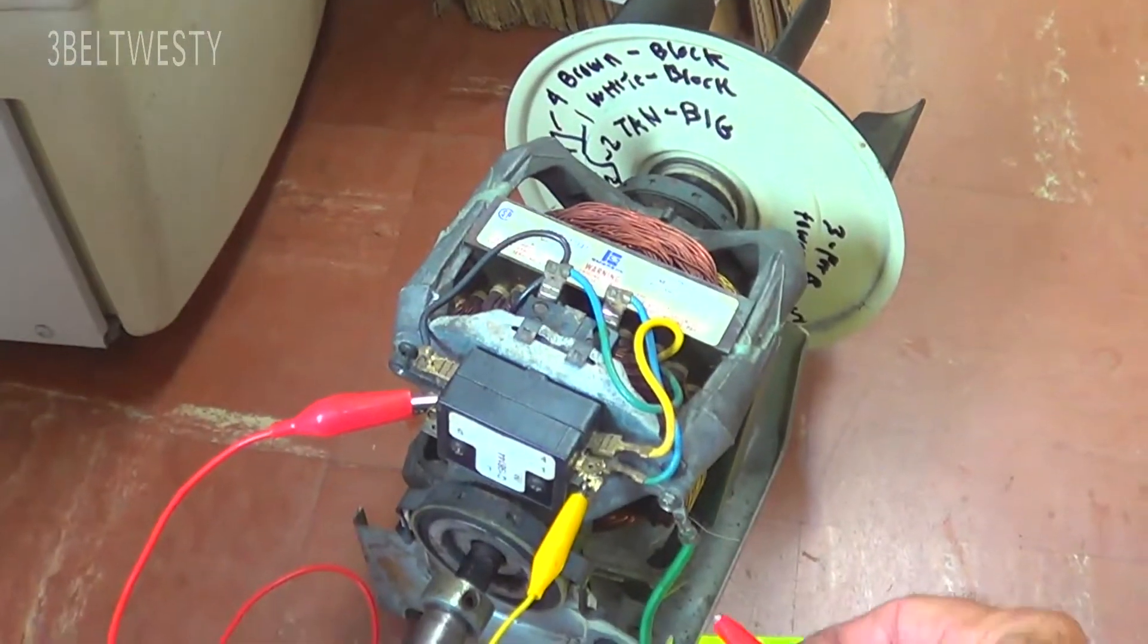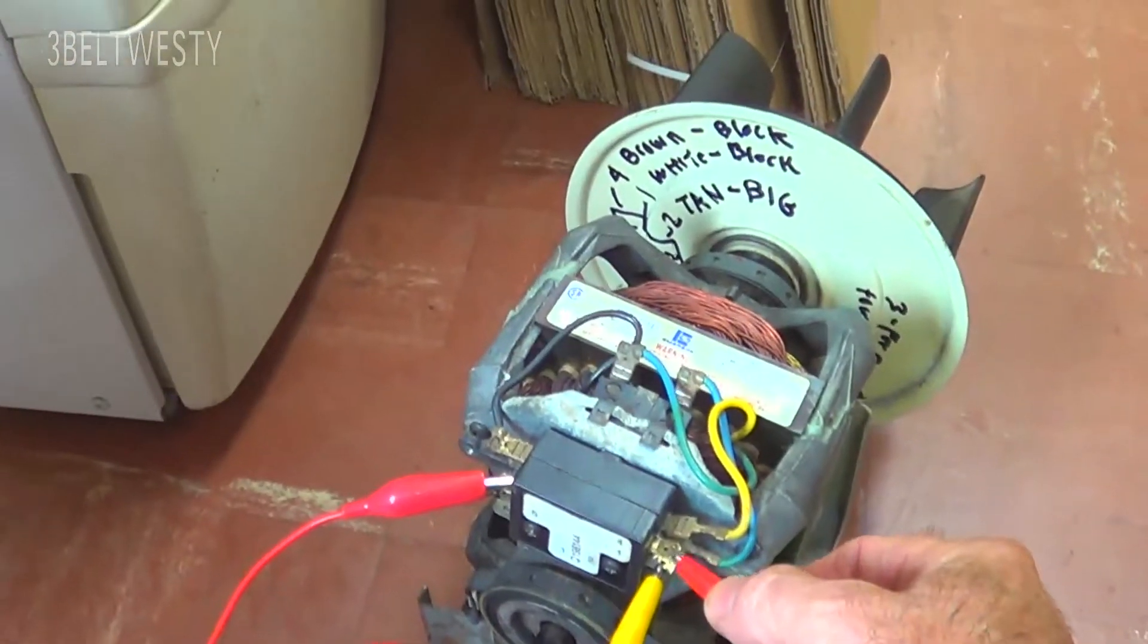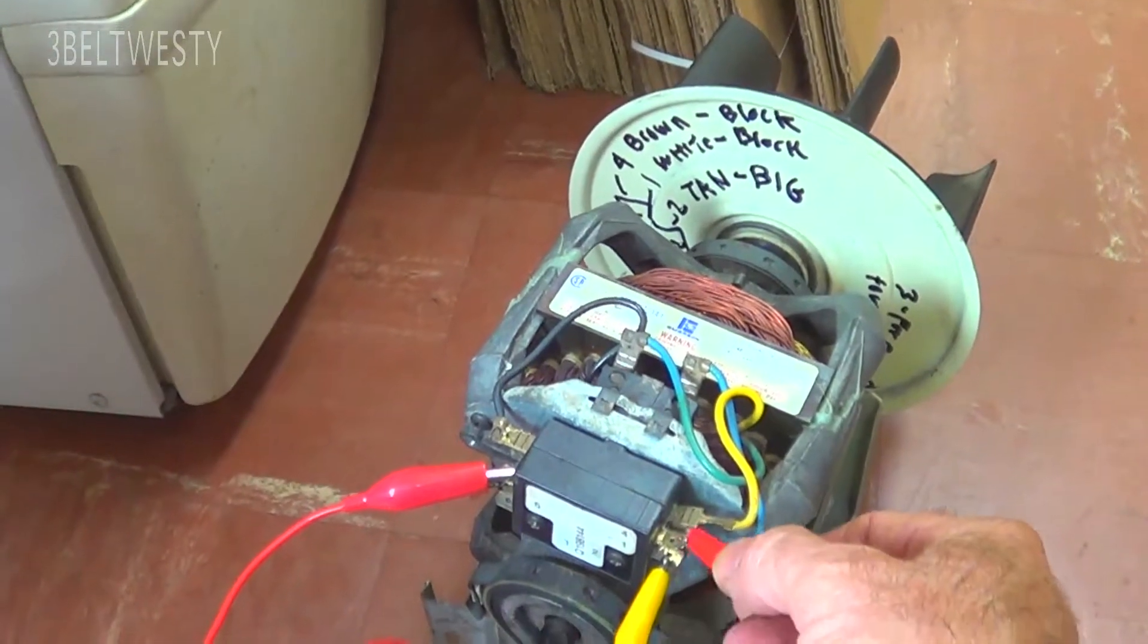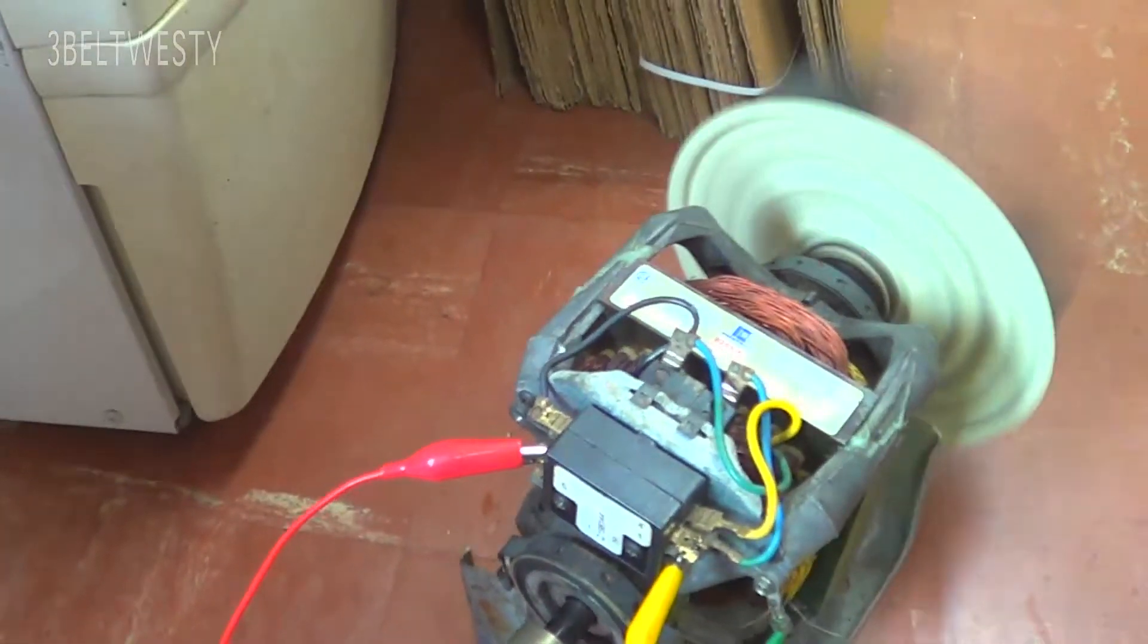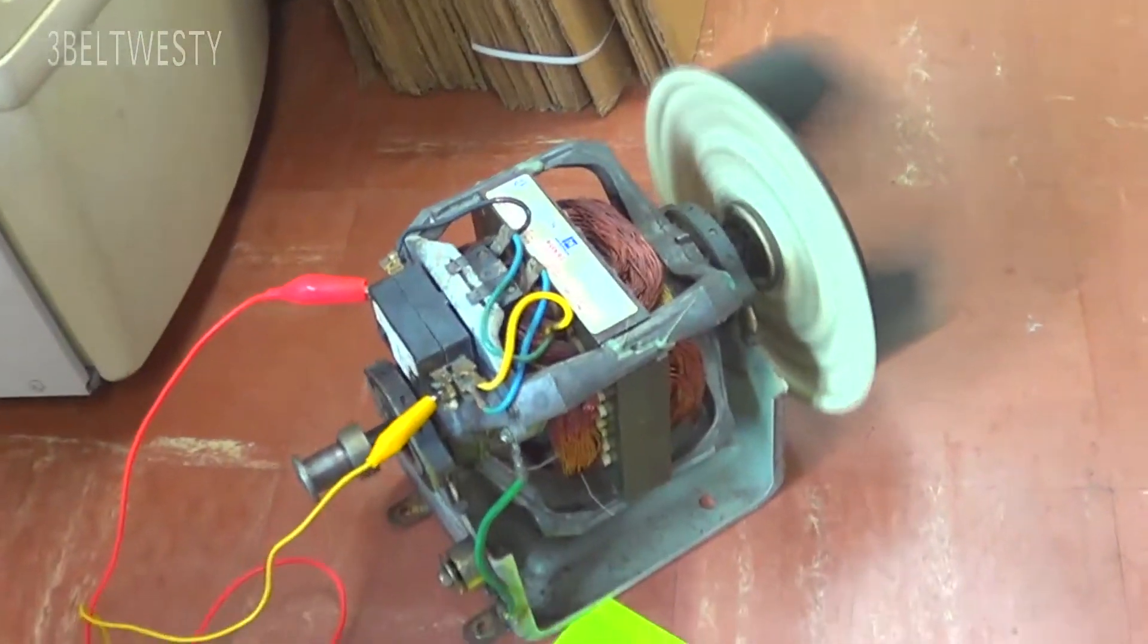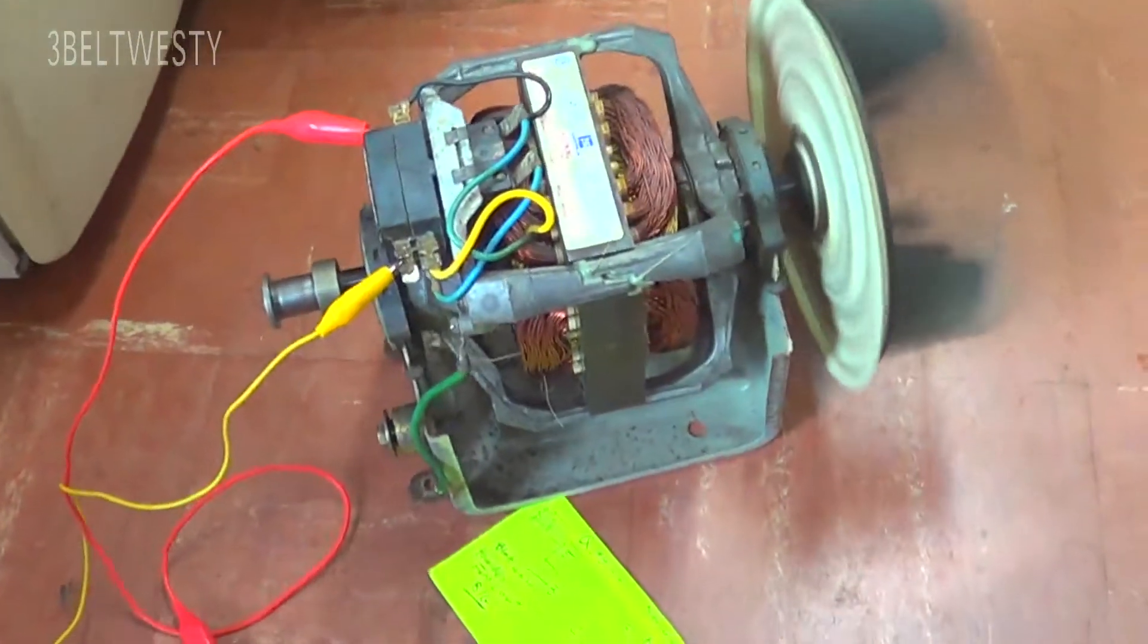Now, the thing's going to dance around on the floor. It's going to move, so I'll pull off this to stop it. There it is going. About 1,800 RPM.